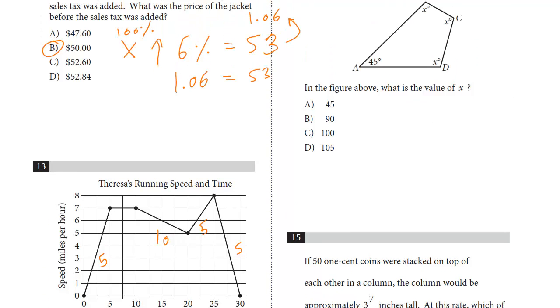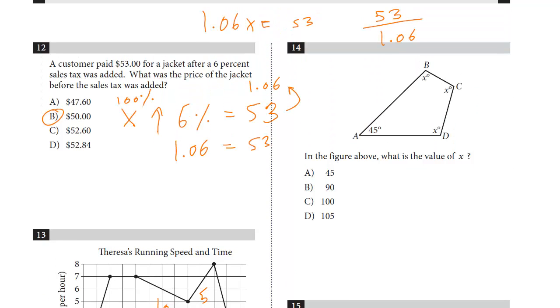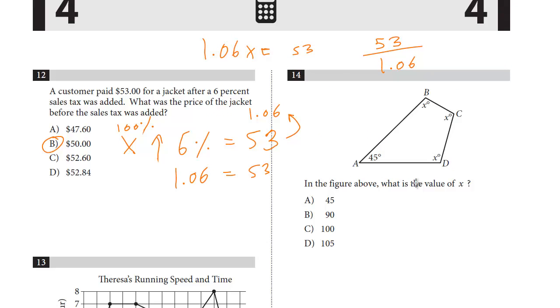Let's take a look at number 14. In the figure above, what's the value of x? Now this is a four-sided figure, a good formula that you should know for any multi-sided shape to figure out the degrees. It's n minus 2 times 180, where n is the number of sides. And so a four-sided shape, four sides minus 2, we know it's going to be 2 times 180. That's going to tell us there are 360 degrees. You can do this with any multi-sided shape, a six-sided shape, an eight-sided shape. It's n minus 2 times 180.